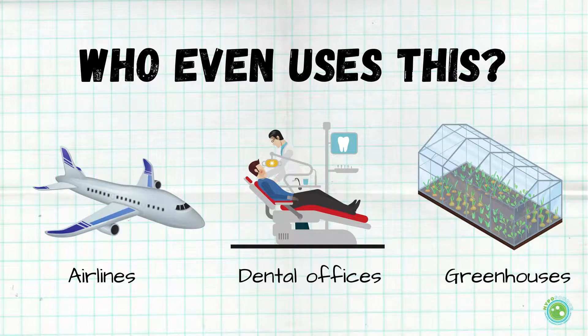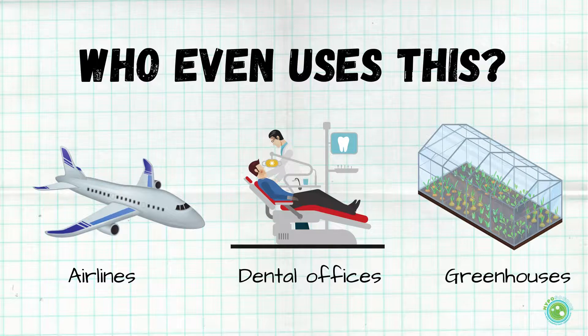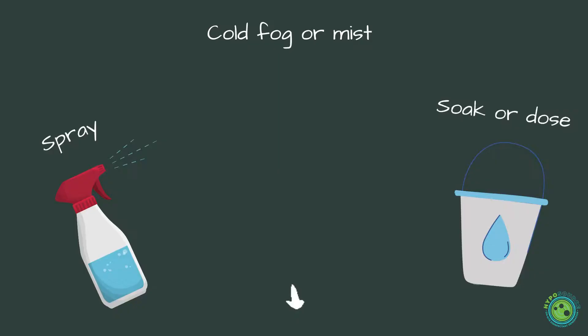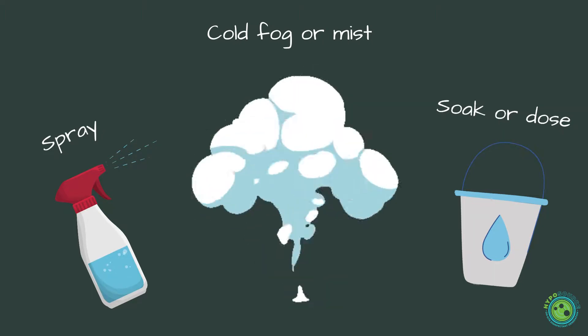So you've got a chemical solution that is non-toxic, easy to make, and kills all sorts of pathogens. Major airlines such as Delta cold fog hypochlorous between flights to disinfect the plane. Dentists use hypochlorous to sanitize equipment, disinfect rooms between patients, and as part of the treatment procedure for root canals. Greenhouses flush their water lines with hypochlorous to remove biofilm buildup and kill harmful microbes. Hypochlorous acid can be sprayed, cold fogged with an ultra-low-volume cold fogger, or dosed in large quantities.